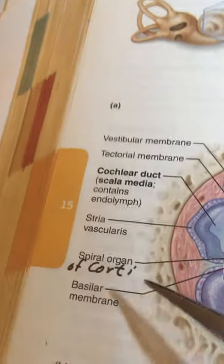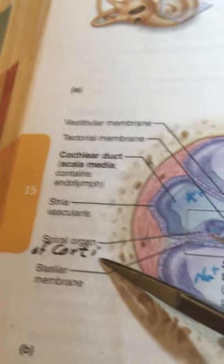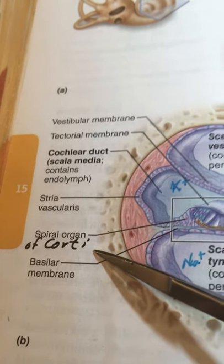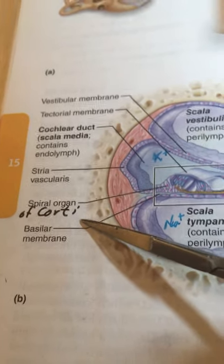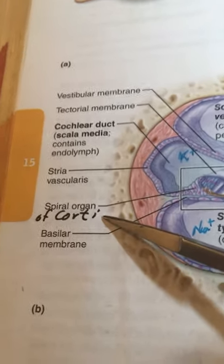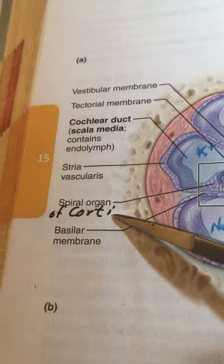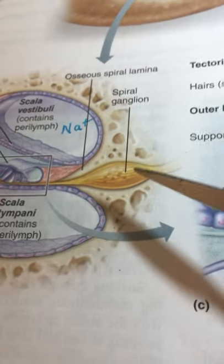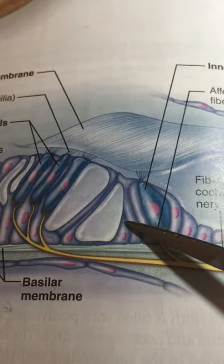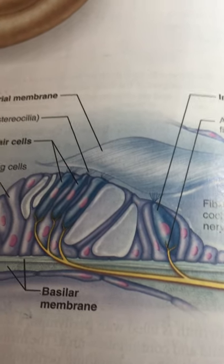This is called the spiral organ of Corti. Modern undergraduate biology tends to avoid eponyms since they're mostly named after historical men. I personally celebrate women of science and will bring them to your attention whenever possible. Nevertheless, we do need to know the full nomenclature, so I will use complete nomenclature throughout.